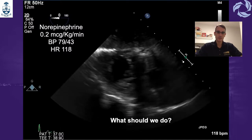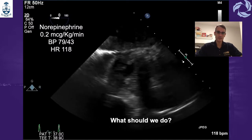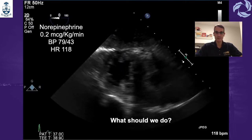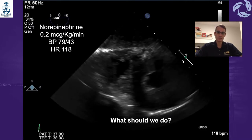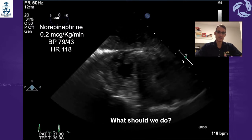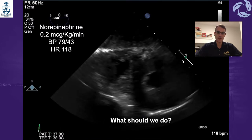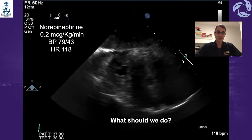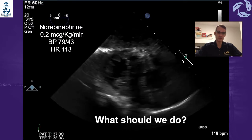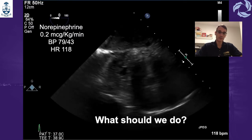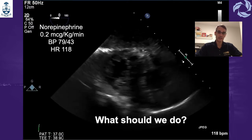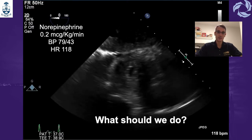Going to the transgastric view, short axis of the left and right ventricle, we can see how those two ventricles are reduced in size, how they are completely collapsed — what we call the fish mouth. This situation was happening with norepinephrine at 0.2 mcg/kg/min, a blood pressure of 79 over 43, and sinus tachycardia of 180 beats per minute.